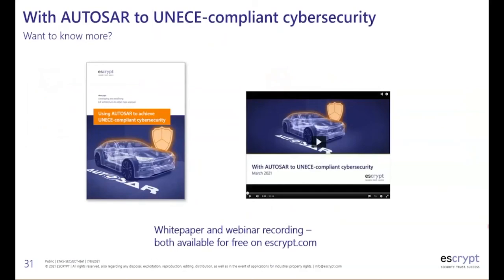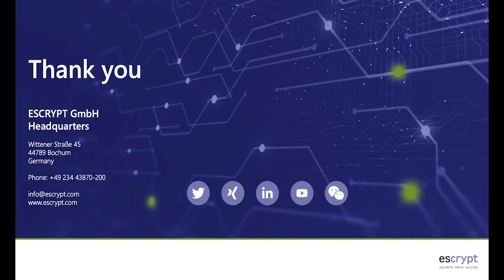Finally, I'd like to highlight a white paper we published at the beginning of this year. With UNECE WP.29 regulations now posing requirements on manufacturers — OEMs must prove they have considered adequate security to gain type approval — we believe AUTOSAR can help demonstrate adequate security through its standardized building blocks. We've analyzed this in our white paper 'Using AUTOSAR to Achieve UN/ECE-Compliant Cybersecurity,' available on our homepage at escrypt.com, along with a related webinar.